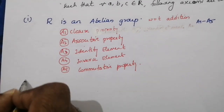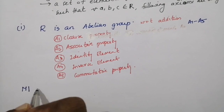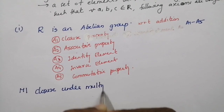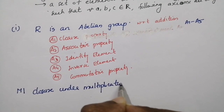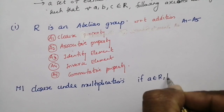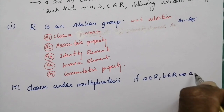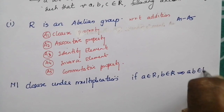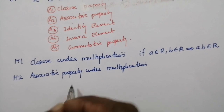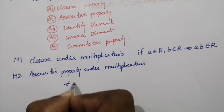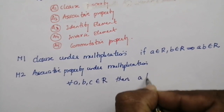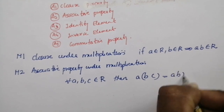Next, a ring must satisfy M1, closure under multiplication: if a belongs to R and b belongs to R, then ab belongs to R. It must also satisfy M2, the associative property under multiplication: for every a, b, c belonging to R, (ab)c = a(bc).